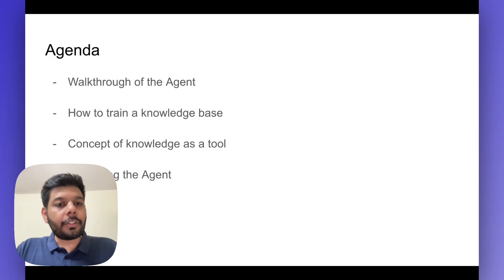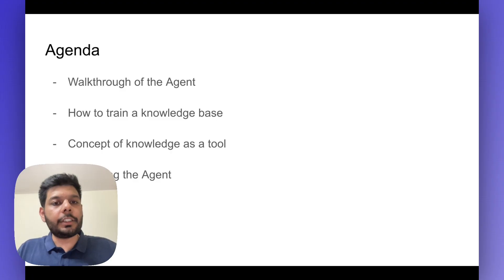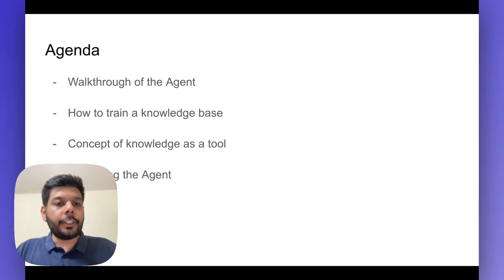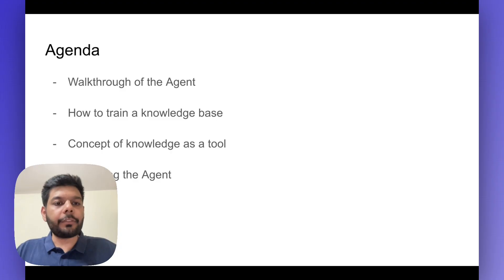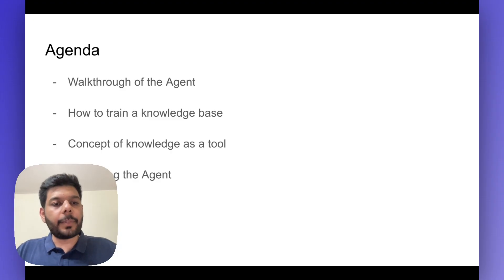Then I'm going to walk you through the concept of tools. You've got an agent, which is the brain, and then it has tools. These tools could be multiple different applications, but how do you use knowledge sources as a tool to answer questions from the knowledge base? I'm also going to be showcasing the prompting part of the agent, because prompting is one area which makes the experience for the end user really, really better if done well.